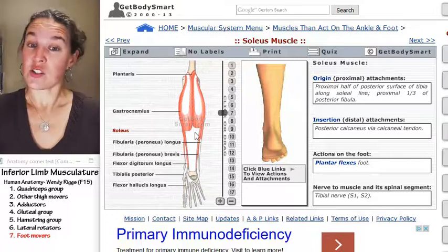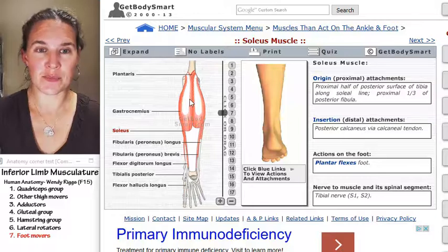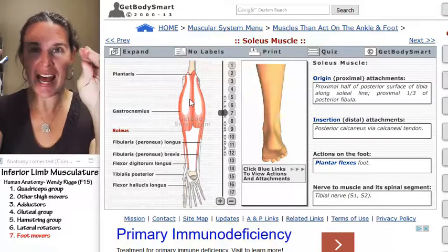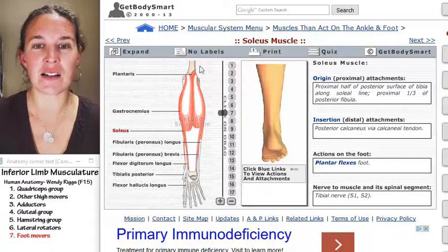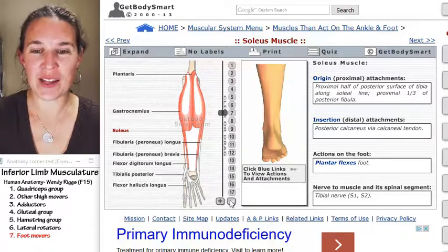Gastrocnemius, you know because it's superficial. You know because it has these two branching bellies that attach to the medial epicondyle of the femur. And if we get rid of that guy, peel it down.